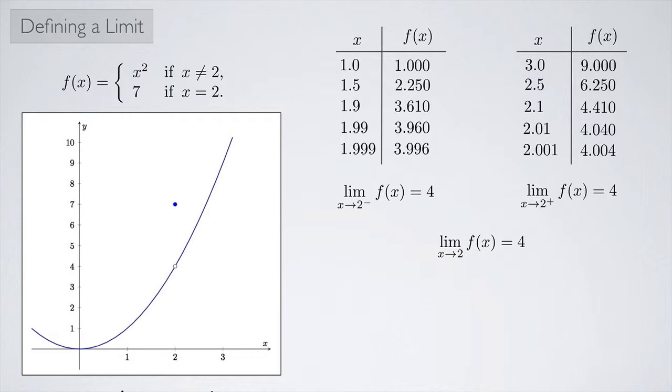Note that f(2) is 7, but the limit doesn't care about what happens right at 2. It just cares about what happens as we get closer and closer to 2.